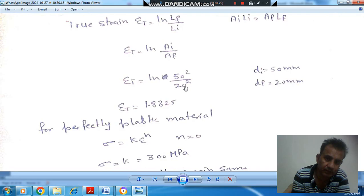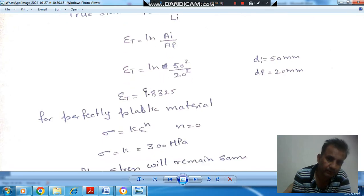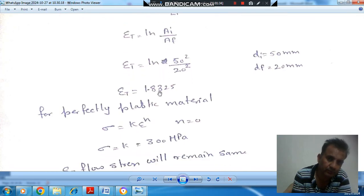As final diameter is 20, so final area will be π/4 × 20² and initial area is π/4 × 50². So true strain comes out as 1.8325.